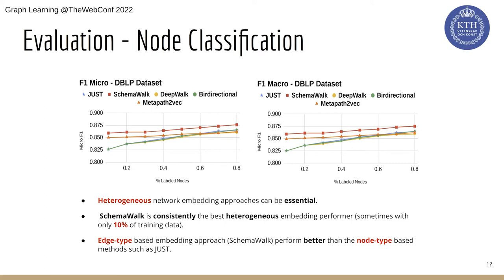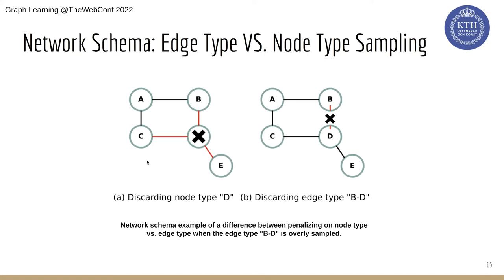An illustrative example: if edge type BD has been visited frequently, node-type-aware approaches will penalize visiting node D itself — meaning the walker can no longer visit D. This shows the limitation of node-type approaches versus edge-type approaches. Please refer to the paper for more details on the full experiments and method.